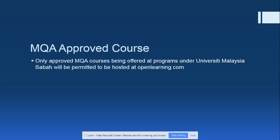The next aspect is the courses approved for conversion to MOOCs. In UMS we have MQA approved courses, and all MQA approved courses which bear an official course code and are actively being offered under programs at UMS will be considered for MOOCs. Remember that your course needs to have a course code as well as a course title.